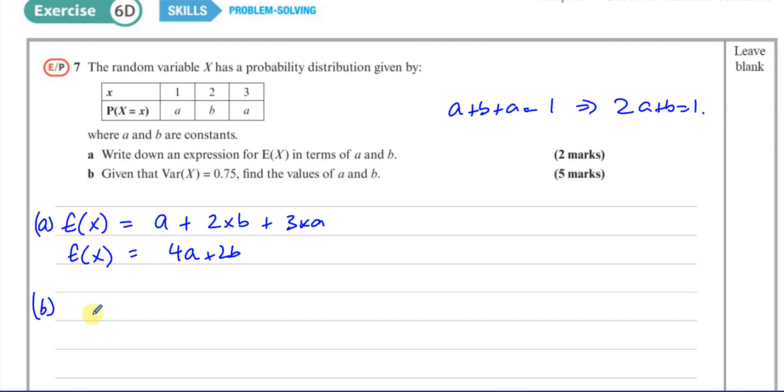Part b says, given that the variance of X equals 0.75, three quarters, find the values of a and b. Now, I know that the variance of something is equal to the mean of the squares minus the square of the mean. That's the way we memorized it. So in this case, it's going to be the mean of the squares, which is E(X²), minus the square of the mean, which is E(X) all squared.